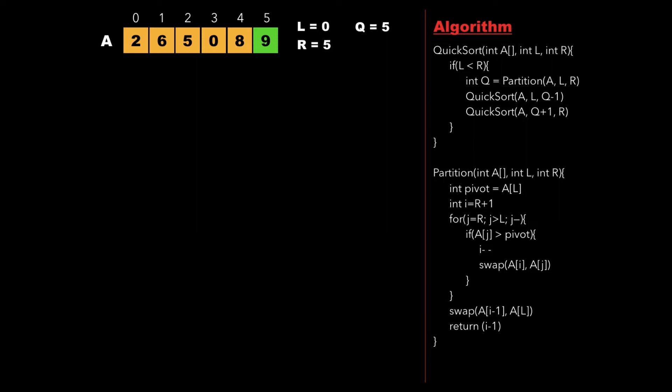Now 9 is inserted at its correct location and we return the value Q as 5. So the value of Q is 5 and the array is divided into left partition and right partition. The left partition is from index 0 to 4, and in this case we don't have any right partition.